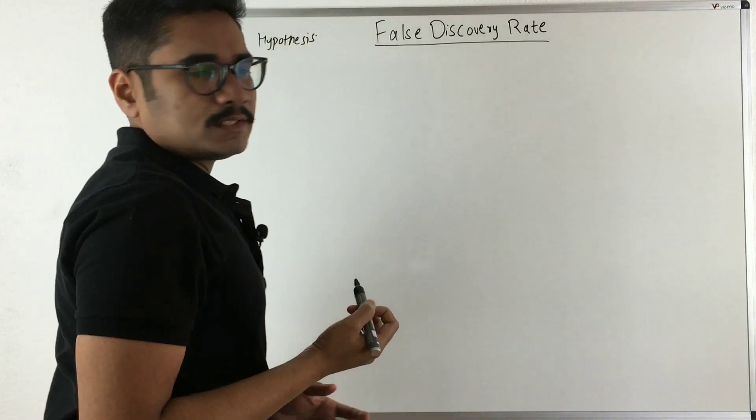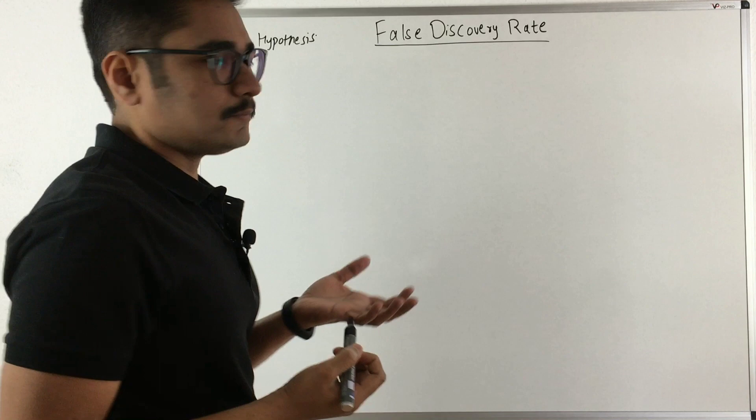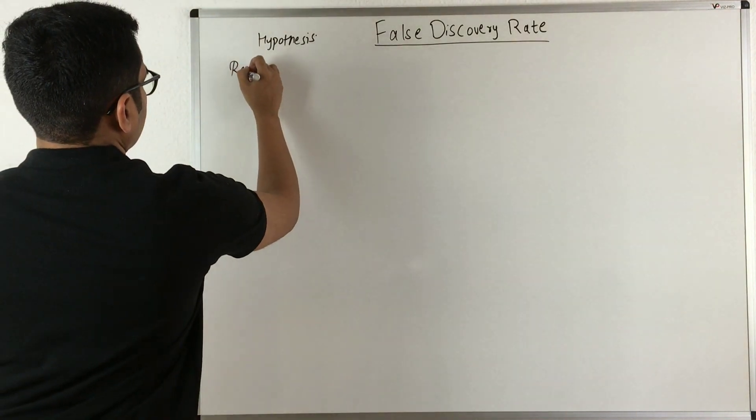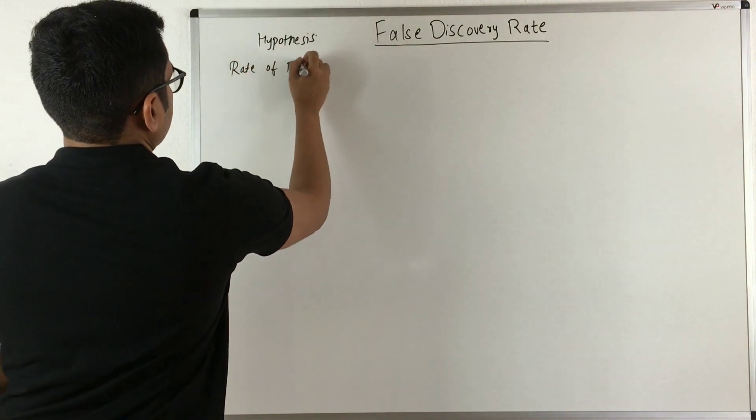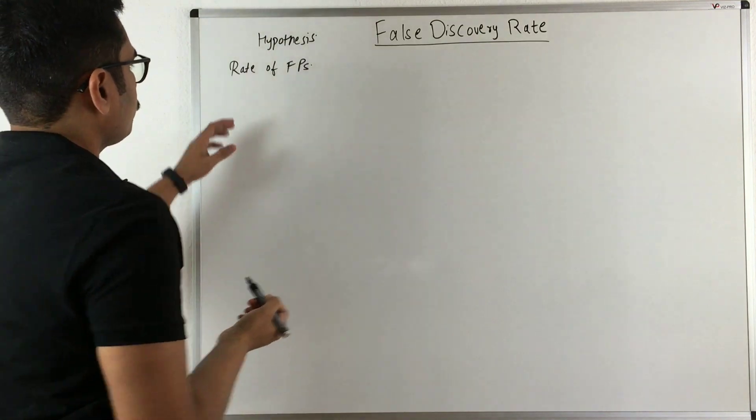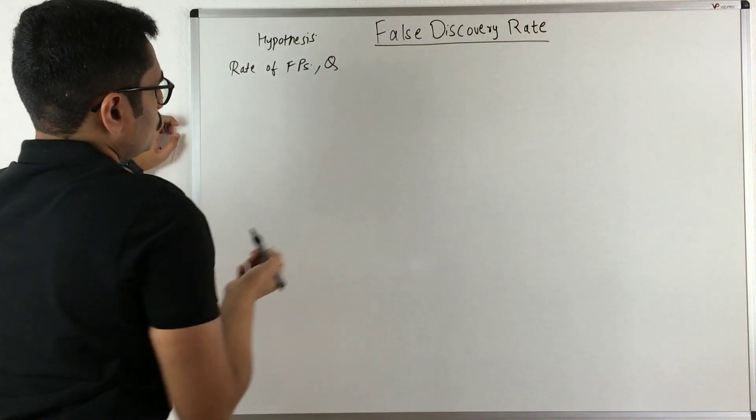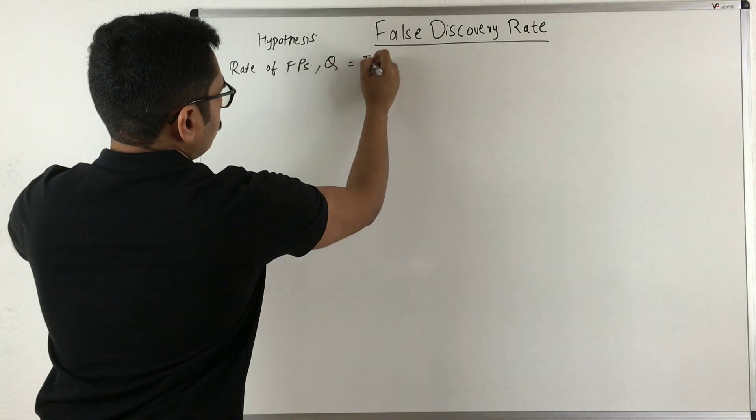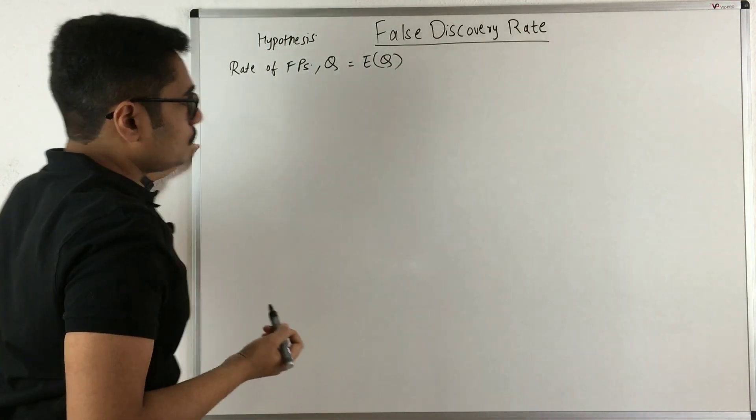False discovery rate is the rate of false positives, represented as Q. Sometimes it's also given as the expected value or expectation of Q.